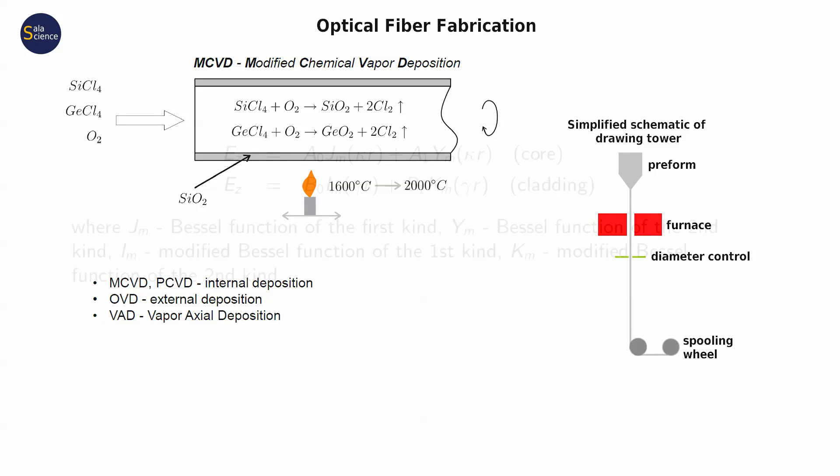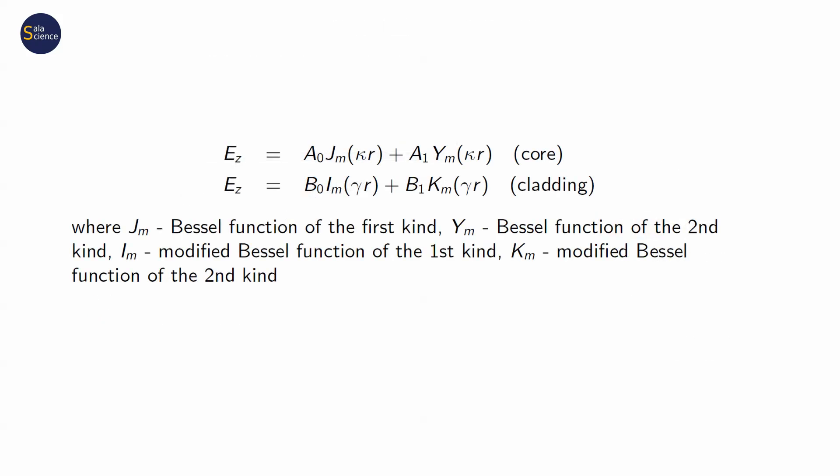Now let's take a look at the electric field. If we use the Helmholtz equation in cylindrical coordinates for the longitudinal component of the electric field, we end up with a Bessel equation. The solution to this equation is a linear combination of Bessel functions.